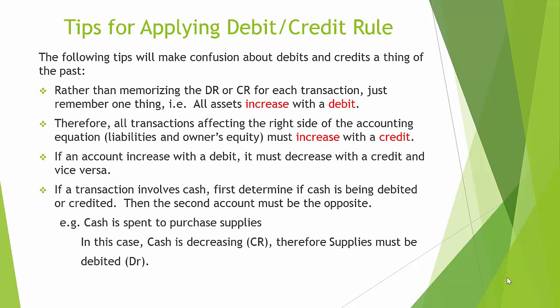The following tips will make confusion about debits and credits a thing of the past. Rather than memorizing the debit or credit for each transaction, just remember one thing: all assets increase with a debit. Therefore, all transactions affecting the right side of the accounting equation must increase with a credit. If an account increases with a debit, it must decrease with a credit, and vice versa. If a transaction involves cash, first determine if cash is being debited or credited — then the second account must be the opposite.